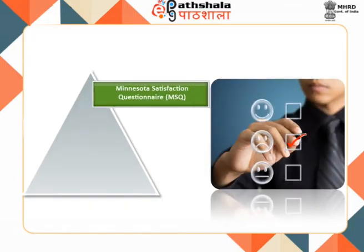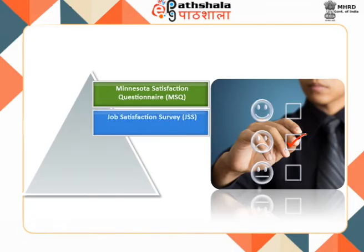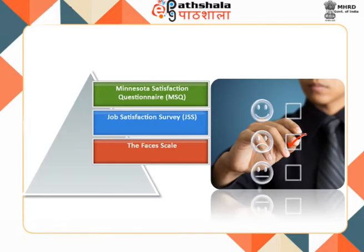The Minnesota Satisfaction Questionnaire (MSQ) measures job satisfaction in 20 facets, with a long form of 100 questions (5 items per facet) and a short form of 20 questions (1 item per facet). The Job Satisfaction Survey (JSS), developed by Spector in 1985, is a 36-item questionnaire measuring 9 facets of job satisfaction: Pay, Promotion, Supervision, Benefits, Contingent Rewards, Operating Procedures, Co-workers, Nature of Work, and Communication. The Faces Scale of Job Satisfaction is one of the first widely-used scales, measuring overall job satisfaction with just one item where participants choose a face corresponding to their satisfaction level.